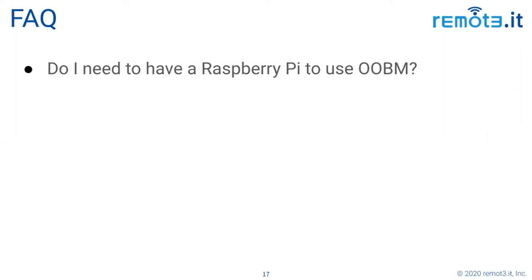So you need two active network interfaces on whatever device you use for the OOB host, and you have to be able to configure that. We've just made it easy on the Pi, and a lot of our users are Pi users, so it makes sense.